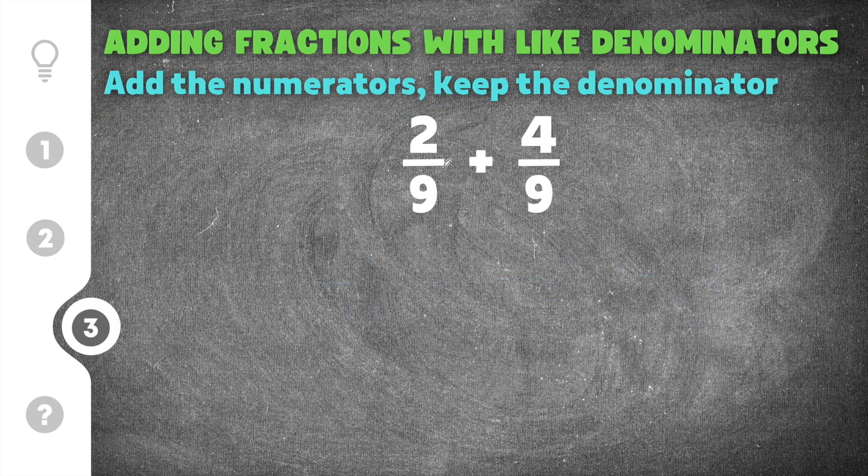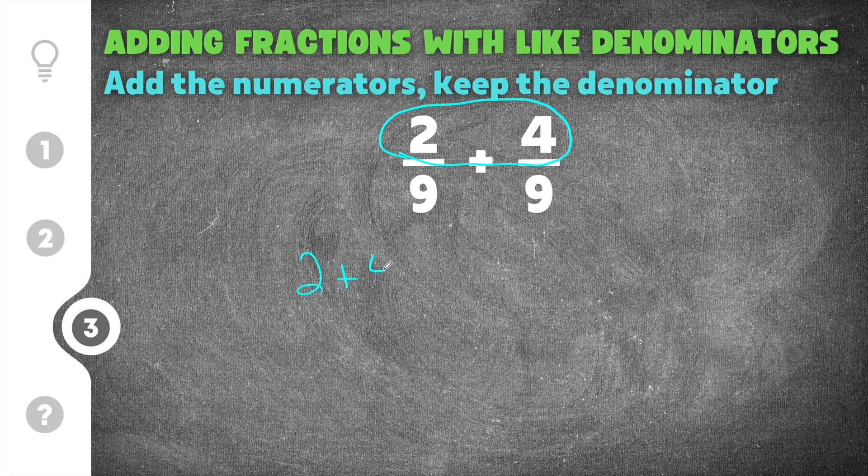Finally the last problem for adding fractions with like denominators gives us two ninths plus four ninths. So again we're going to go ahead and add the numerators. Two plus four. So we got two plus four and then we're going to keep the denominator the same because they're already alike. So we're going to keep the nine. Then we're going to do two plus four which is six and then the denominator is nine. So our solution right now is six ninths.